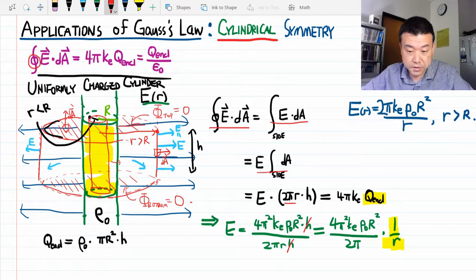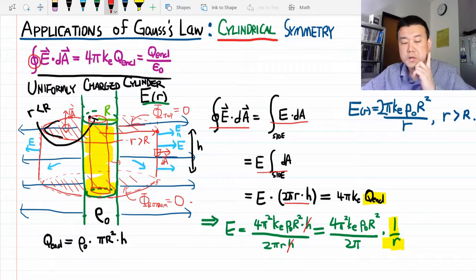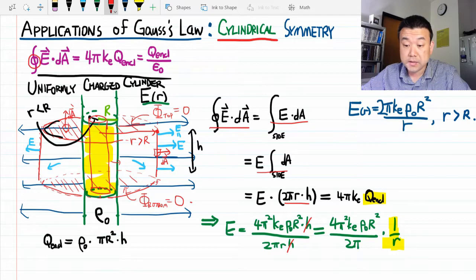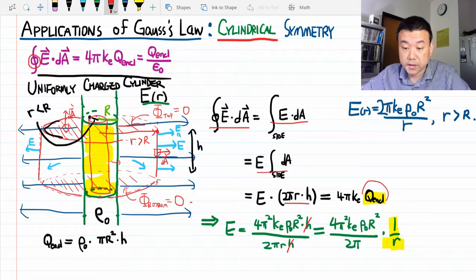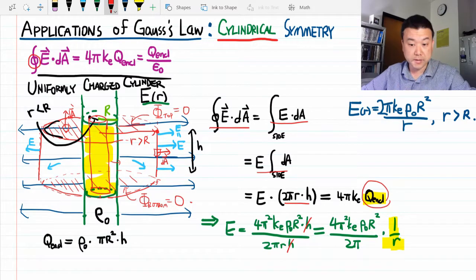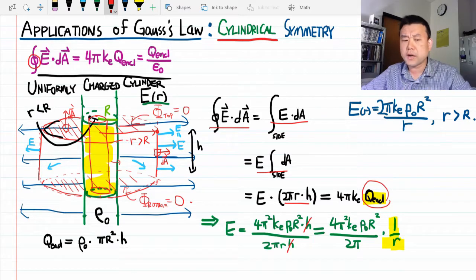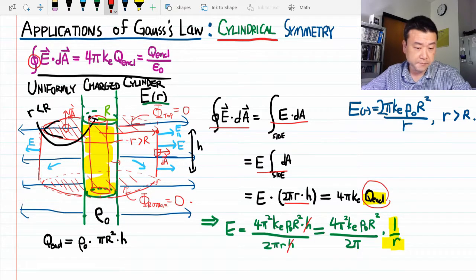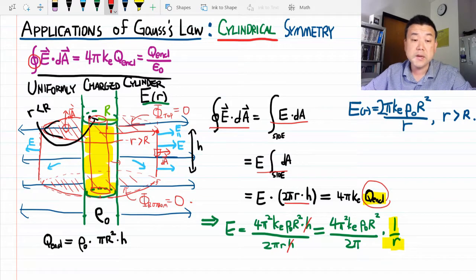The surface area of the side surface won't change. So what changes is exactly what we dealt with for the spherical case: we have to work out the enclosed charge again. With the radius of the Gaussian surface less than the radius of the charge distribution,